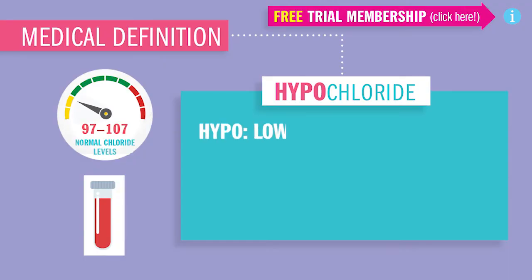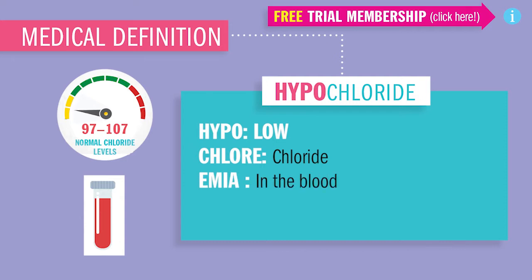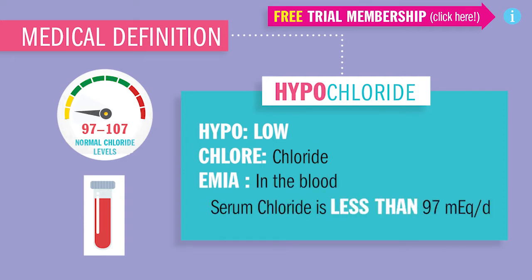Hypo meaning low, Chloride meaning Chloride, emia in the blood. So Chloride less than 97 in the blood.